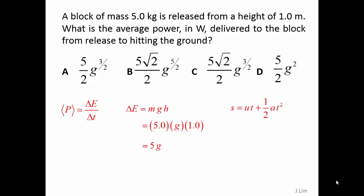Using the kinematics equation S = ut + ½at², we get the time as the square root of 2 over G.